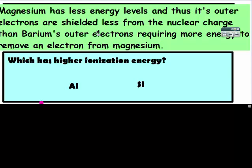Figure out which one has a higher ionization energy: aluminum or silicon. Restart when you have your answer.